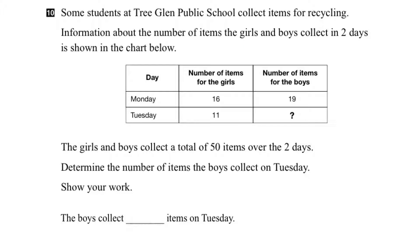In question 10 we're given a table that shows the amount of recycled items that have been collected over two days by both girls and boys. We're also told that the boys and girls collect a total of 50 items over those two days. What we're asked to find out is this missing value here, which represents the number of items that were collected by the boys on Tuesday.